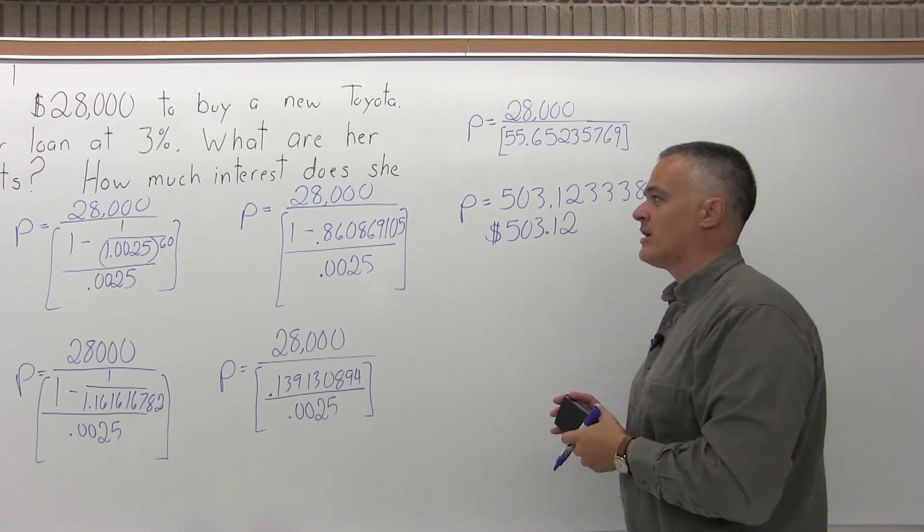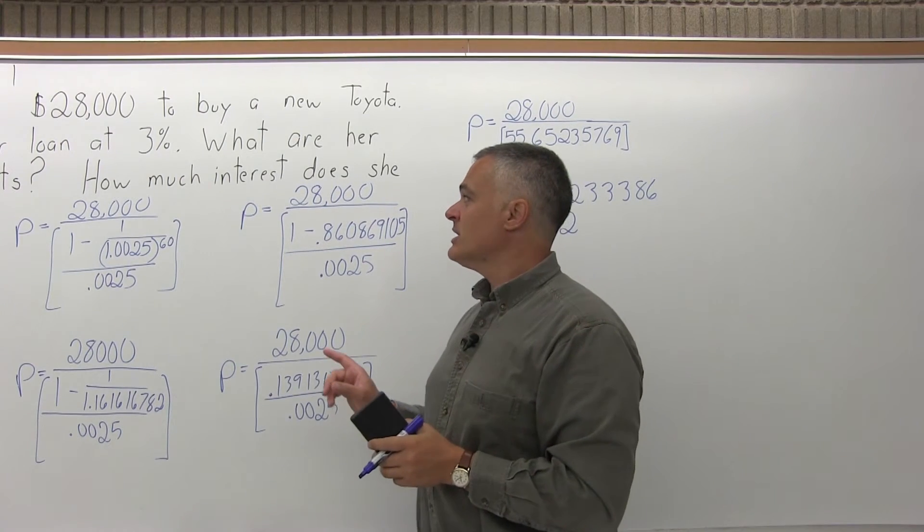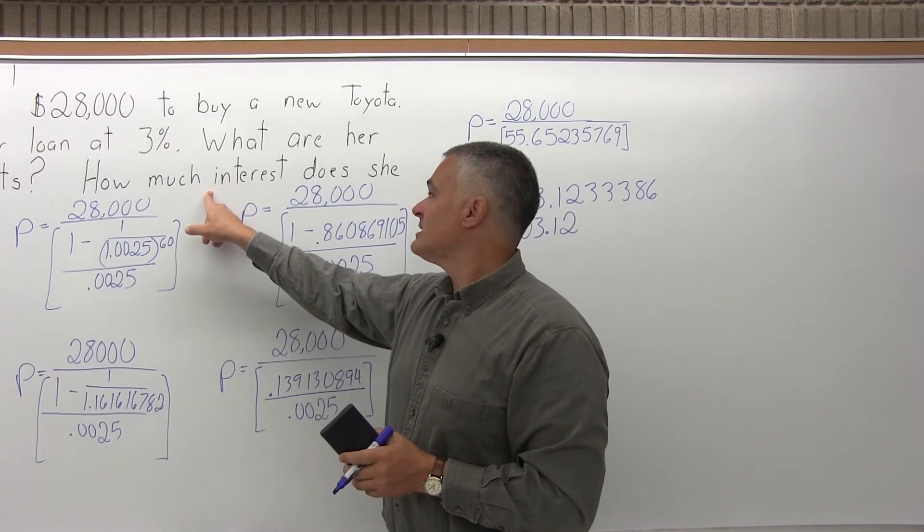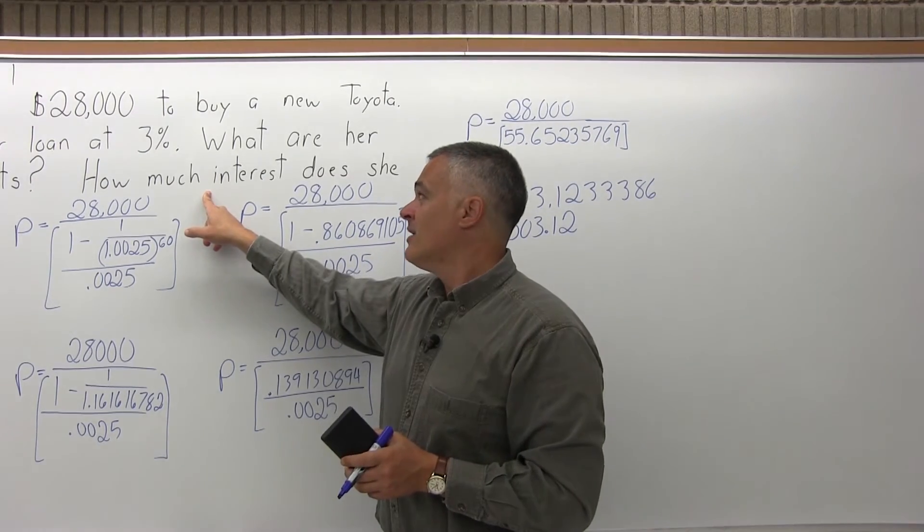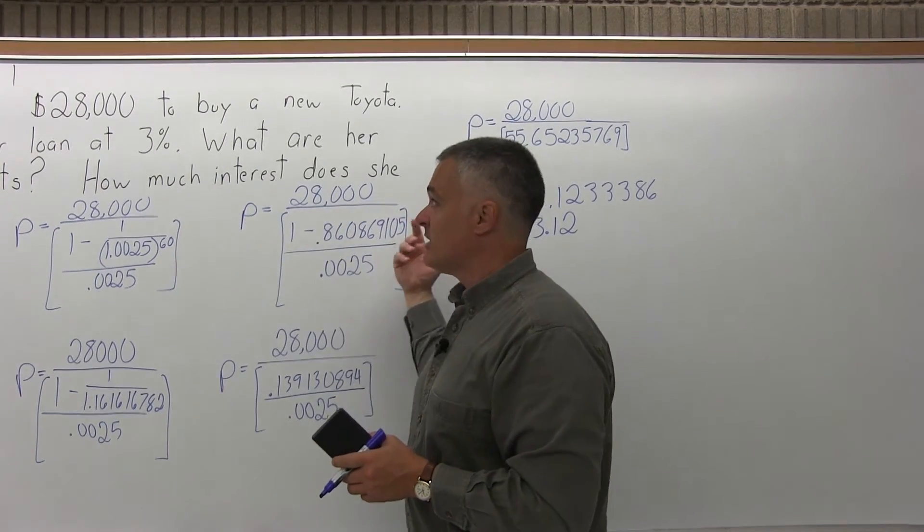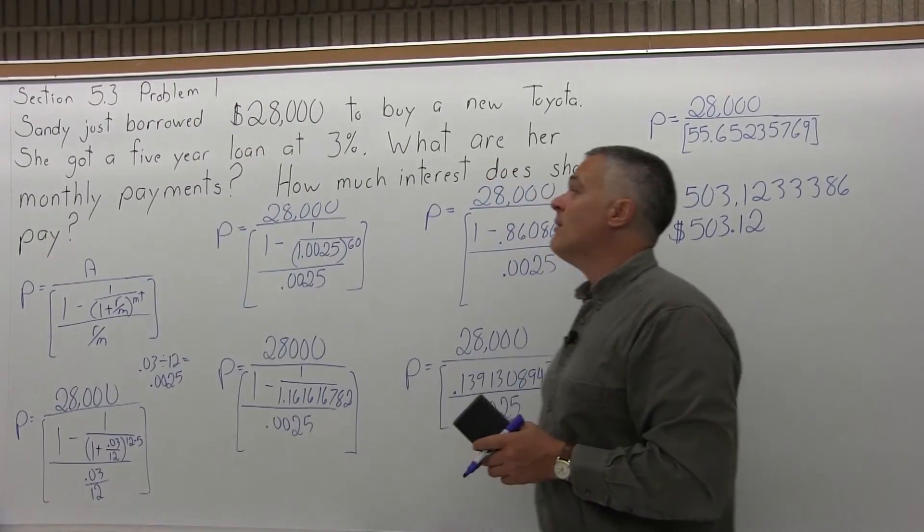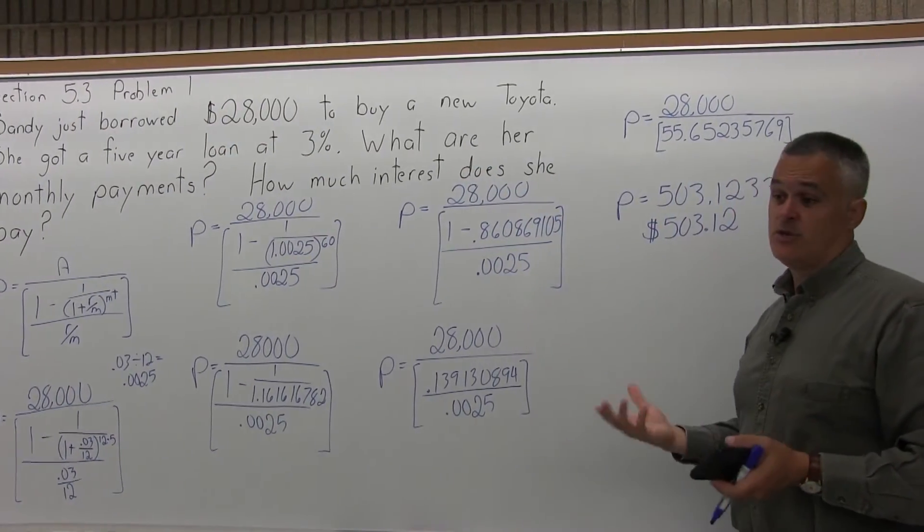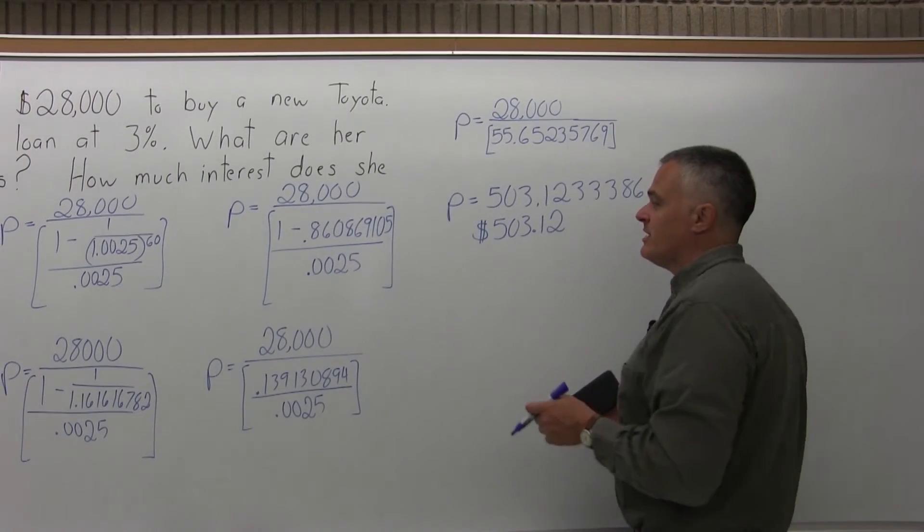That will cover a $28,000 car loan, a five-year loan at 3%. Now, the second part of the question is, how much interest does Sandy pay? So if she's buying this car, most of the monthly payment should go towards the $28,000 purchase of the car. But some of that goes towards interest for the person who gave the loan. So how do we figure out the interest?